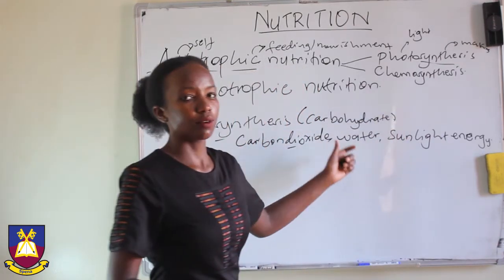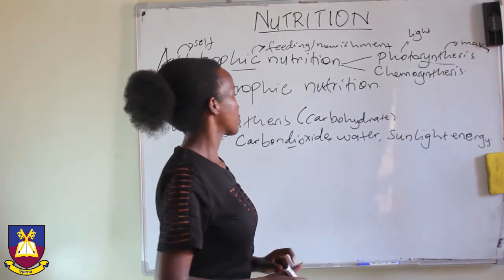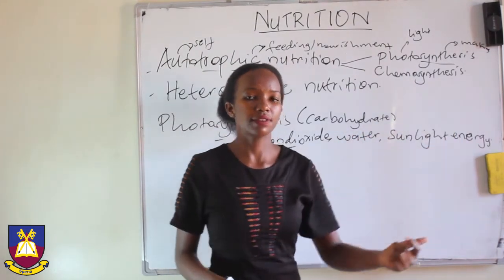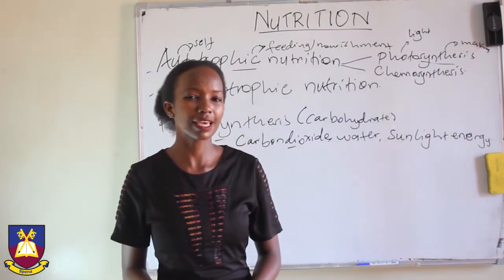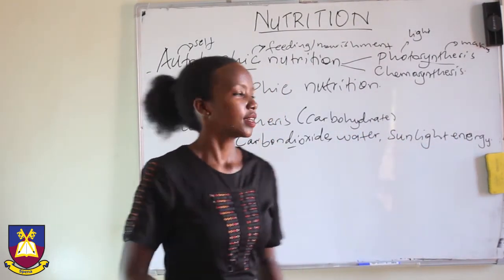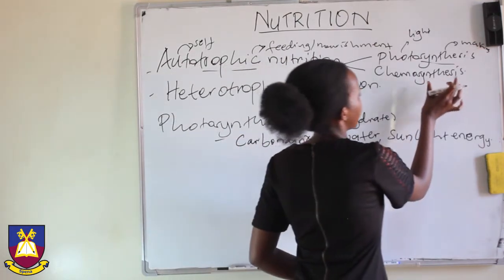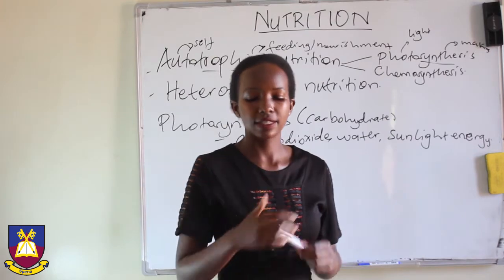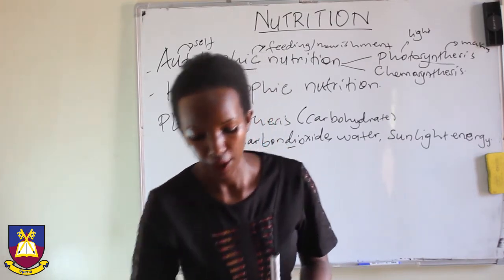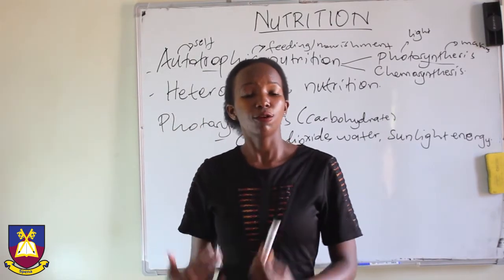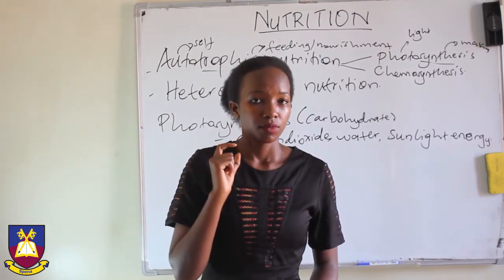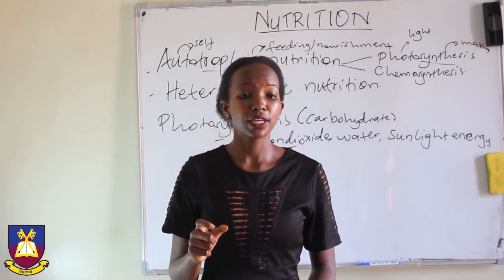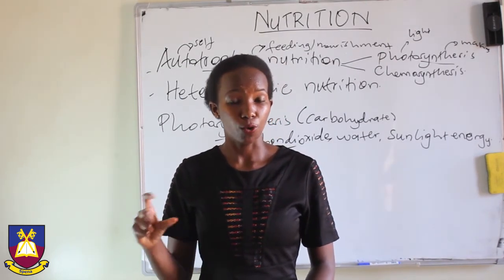We shall talk about photosynthesis in detail as we go on. The next one is chemosynthesis. Chemosynthesis is the process by which organisms make their own food using energy obtained from chemical reactions.